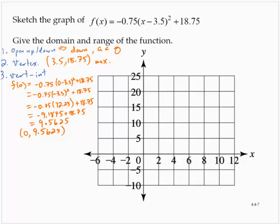Now let's add a new step. Let's find the horizontal intercepts, if there are any. So the horizontal intercepts you find by letting the function equal 0. So we would have negative 0.75 times (x minus 3.5) squared plus 18.75 equals 0.